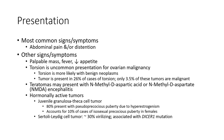Teratoma may present with anti-NMDA receptor encephalitis. Hormonally active tumors such as juvenile granulosa and theca cell tumors present with isosexual precocious puberty in 80% of cases due to hyperestrogenism. Sertoli-Leydig cell tumors account for around 30% virilizing cases and are associated with DICER1 mutation.